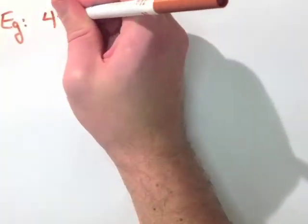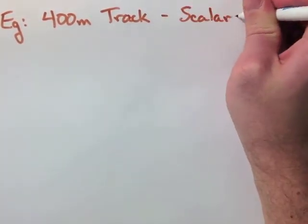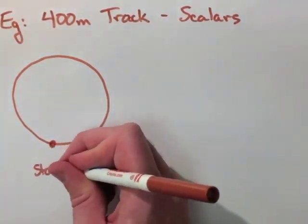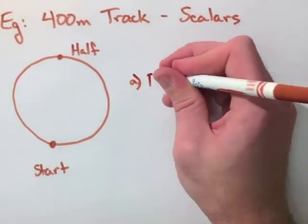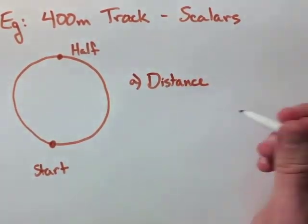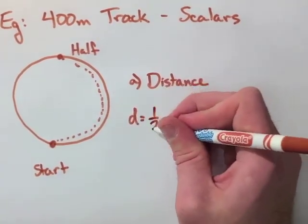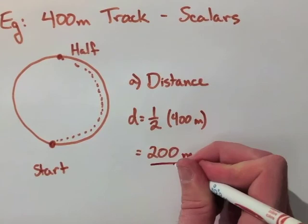Let's look at the first example when we're talking about traveling around a 400-meter track using scalars. When we're looking at this, we have our starting point. We're talking about looking at halfway around the track. For that, when we talk about distance, all we have to do is take our distance that we've traveled, which here would be 400 divided by 2, or one-half of 400, which is 200 meters.